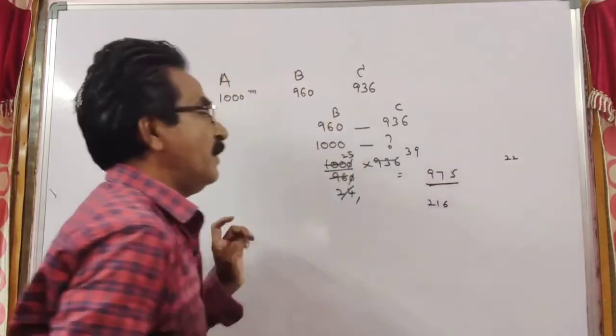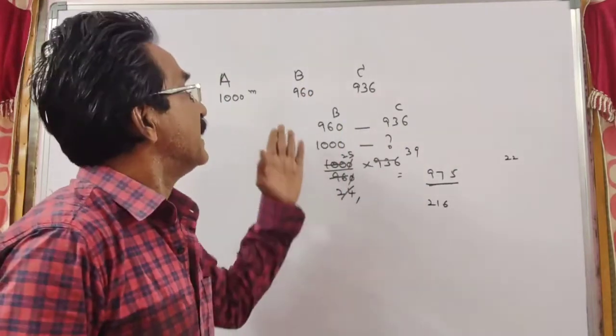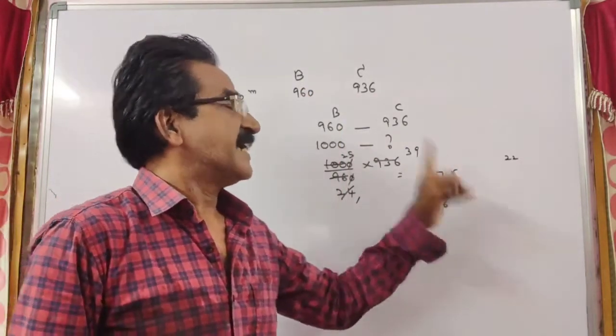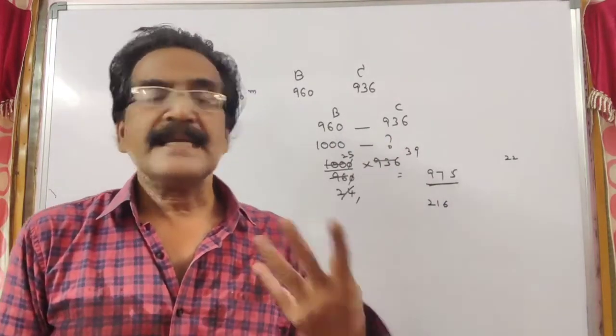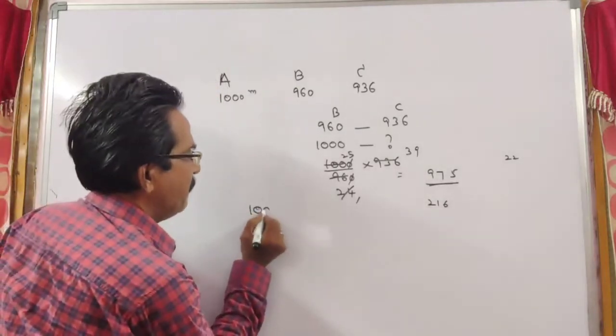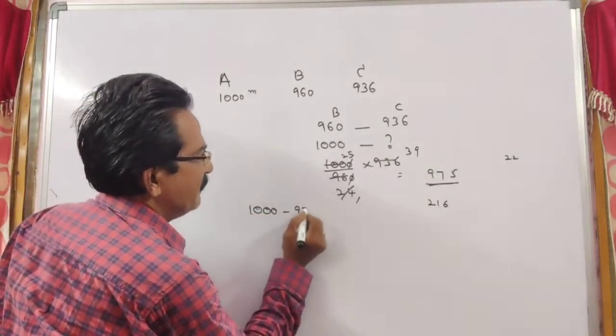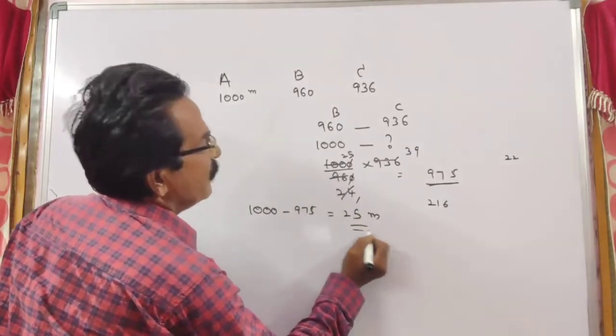So if B runs 1000, C runs 975 meters. So B can give C a start of 25 meters. 1000 minus 975, so B can give C a start of 25 meters.